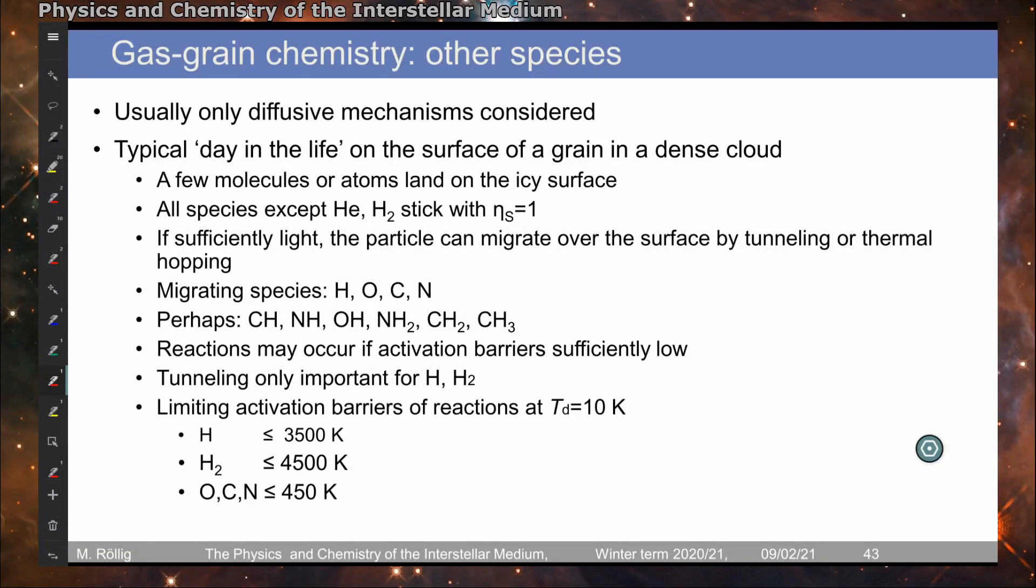So in other chemical species, typically only diffusive mechanisms are considered. So the typical day in the life on the surface of a grain is that we have a few molecules or atoms landing on the surface. Everything other than hydrogen and helium actually sticks. If the species are sufficiently light, they can hop around or tunnel from one binding site to the other. And if they encounter another species, we might have reactions if activation barriers are sufficiently low. So the limiting activation barriers of reactions at around 10 Kelvin dust temperature are at a few hundred or a few thousand Kelvin for the different species.